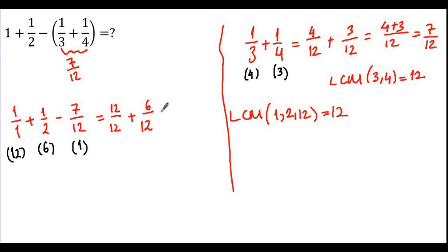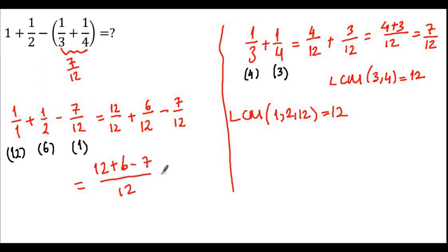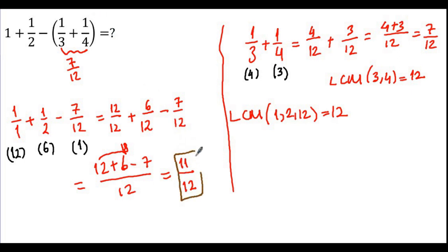7 over 12 — the denominator is already 12. Now we have the same denominators, so we add the numerators: 12 plus 6 minus 7 over 12. Addition and subtraction are at the same level, so we go left to right. 12 plus 6 is 18, and 18 minus 7 is 11. So 11 over 12 is our answer.